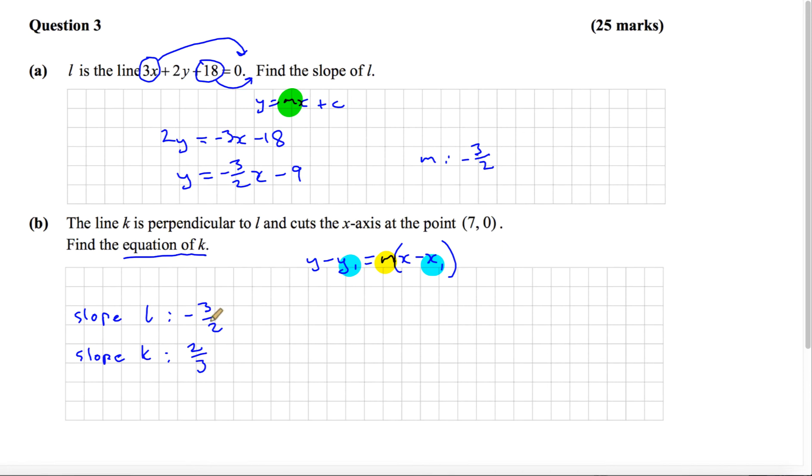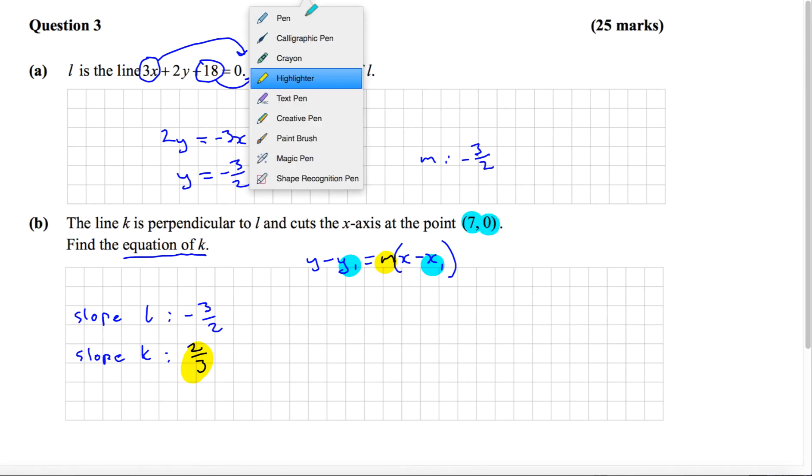Perpendicular lines have slopes that are negative reciprocals of each other. That's going to be our m value for the line we're looking for. For the x1, y1, we can use the point (7, 0) that they give us in the question.